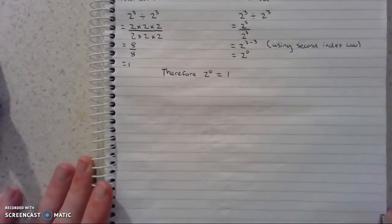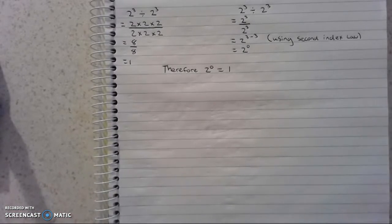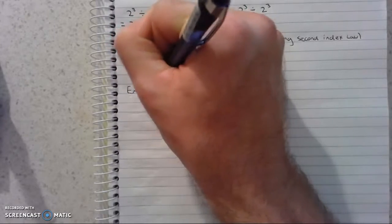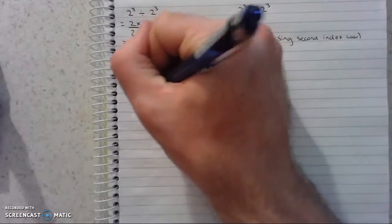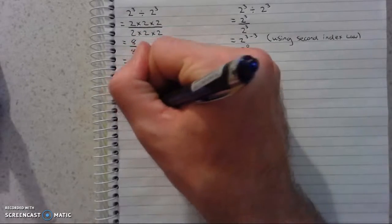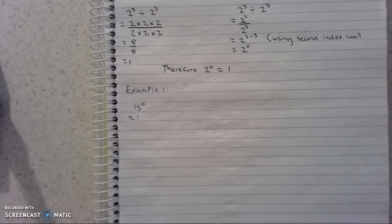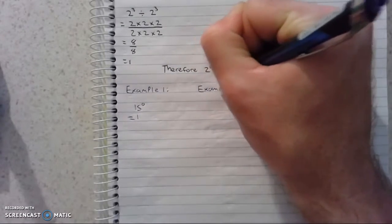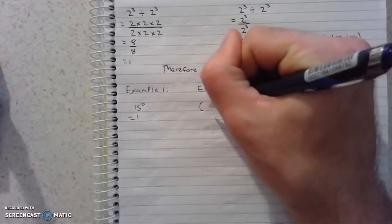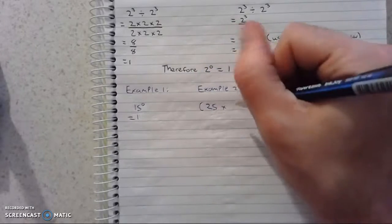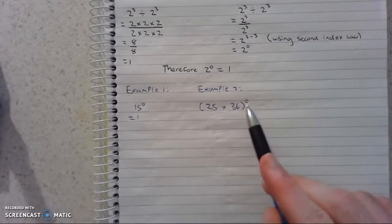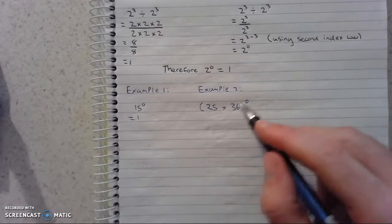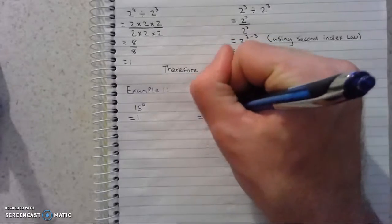So let's do some examples applying this theory. Example 1: we know that any single base with an index of 0 must equal 1. You can choose any number — 15 to the index of 0 equals 1. It could be any base. Even if we have brackets: Example 2, we could have any number in brackets — say 25 times 36 — and if that whole bracket is to the power of 0, it doesn't matter what's inside. Anything to the power of 0 equals 1.